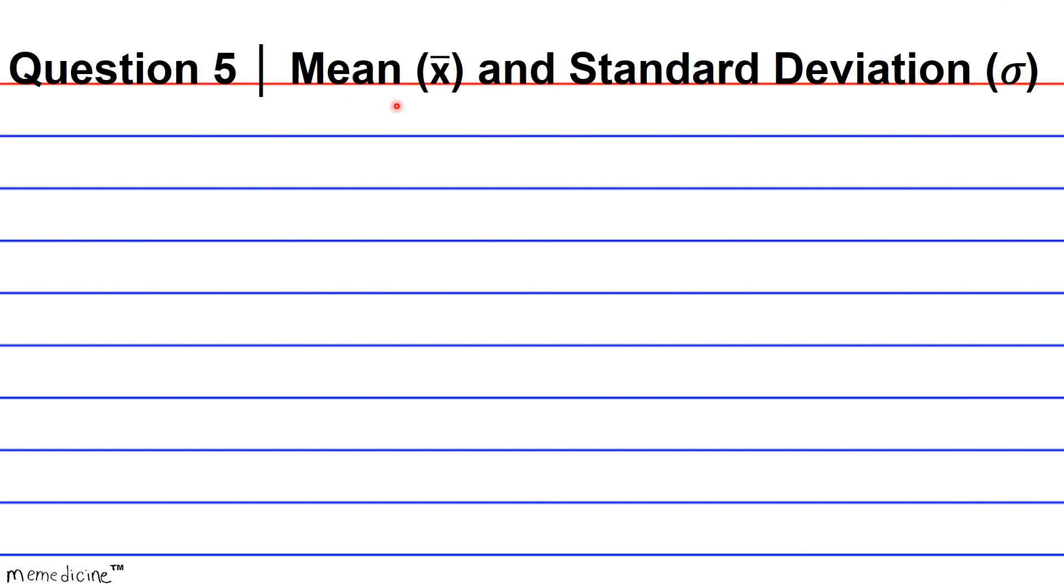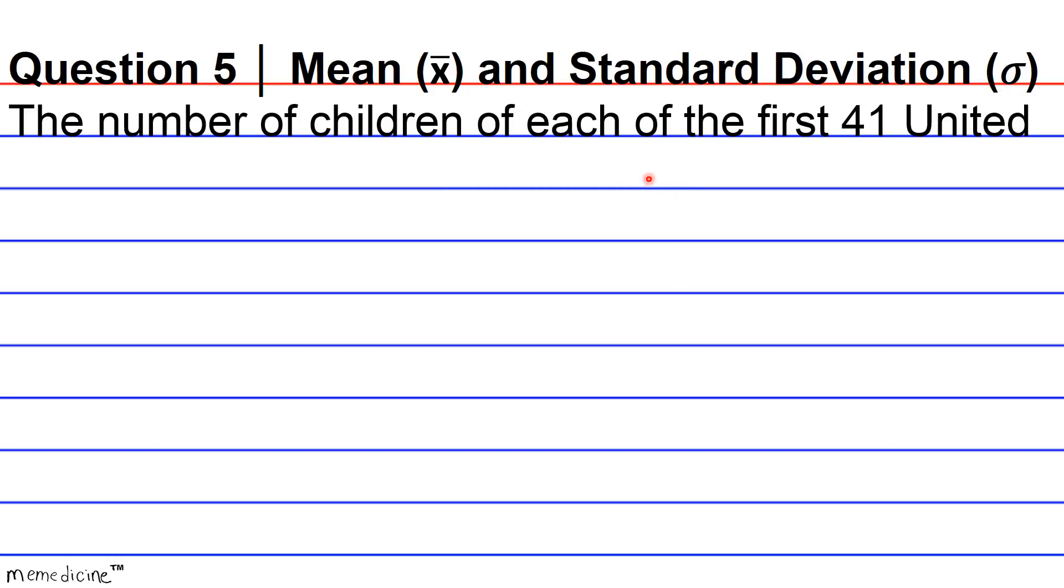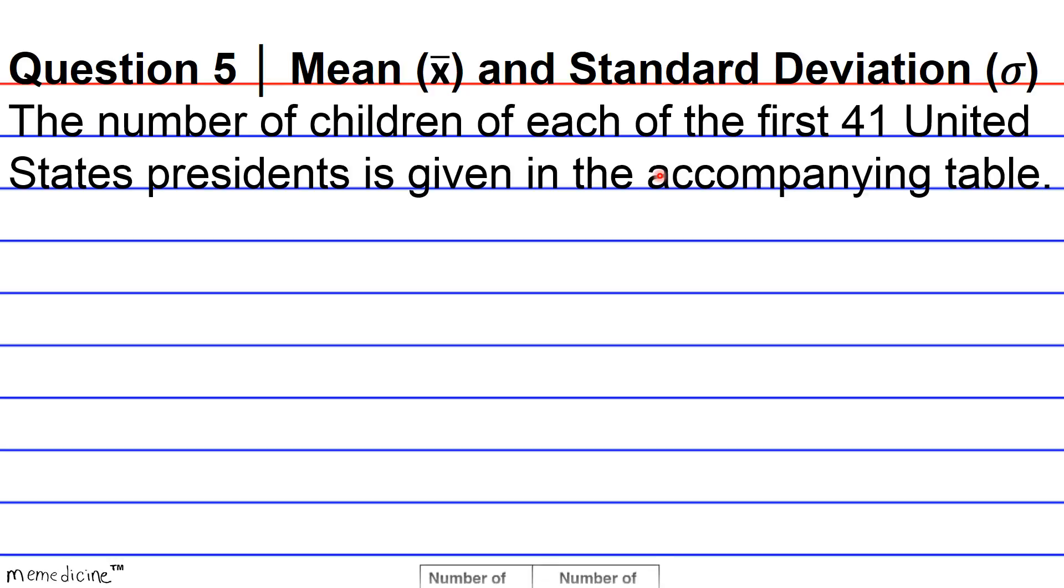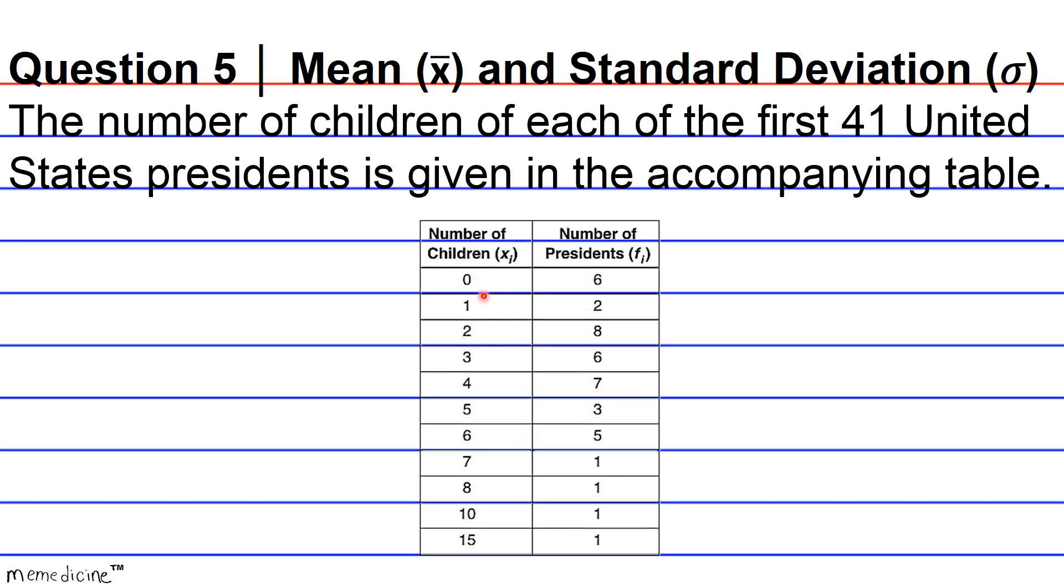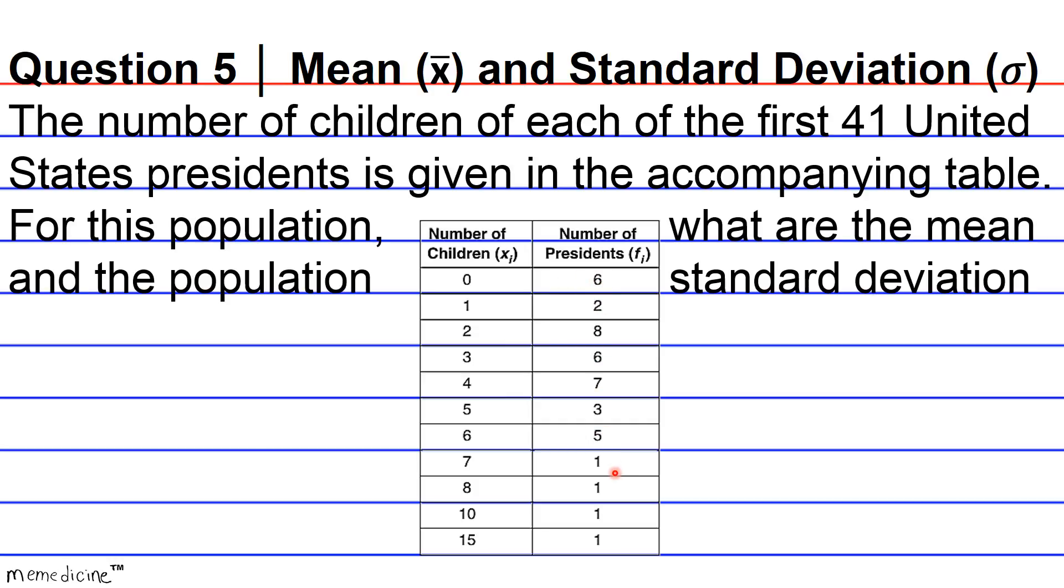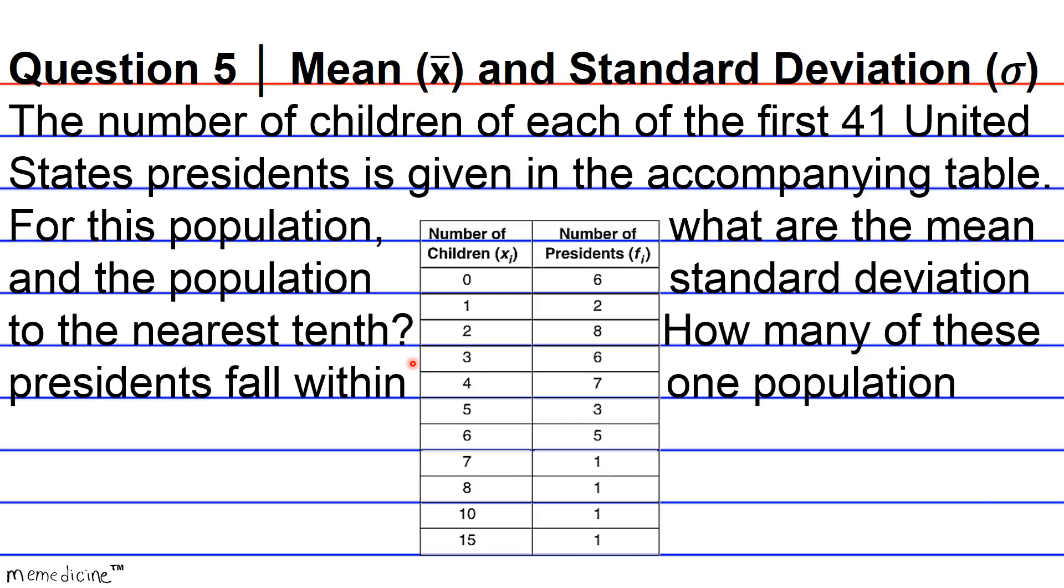Question 5, Mean - that is the sample mean denoted with this figure, pronounced X-bar - and standard deviation. We're dealing with the population standard deviation represented by the lowercase Greek sigma. The number of children of each of the first 41 United States Presidents is given in the accompanying table. For this population, what are the mean and the population standard deviation to the nearest tenth? How many of these presidents fall within one population standard deviation of the mean?